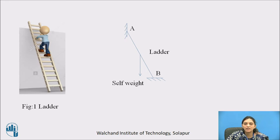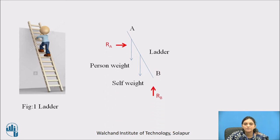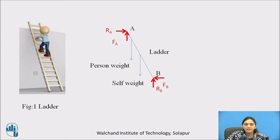The self-weight of the ladder acts at the center of the ladder in the vertically downward direction. The person is standing near the upper end of the ladder and the self-weight of that person also acts vertically downward. For the free body diagram, we remove the supports and instead show the support reactions. At point A, after replacing the vertical wall, a horizontal reaction acts. At point B, after replacing the horizontal floor, a vertical reaction acts. Point A has the tendency to slip down and point B has the tendency to slip in the right direction, so frictional forces act in the opposite directions to prevent that motion. The free body diagram of the ladder is now complete.